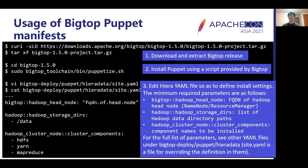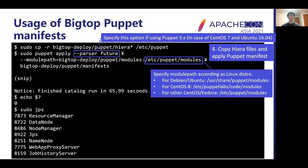Applying Puppet manifests is a bit more complicated than installing packages. First, download and extract the Big Top release tarball. Next, install Puppet using a script included in the tarball. Then edit the Hiera YAML file to define install settings — users have to set values for at least three parameters. Users can configure more detailed settings by checking the YAML files under bigtop-deploy/puppet/hiera-data and overriding them if needed. Finally, copy Hiera files into the designated directory and run the puppet apply command. If deployment succeeds, the puppet apply command will return status code 0 and provisioned services should be started.